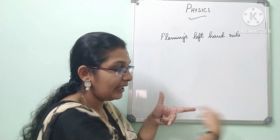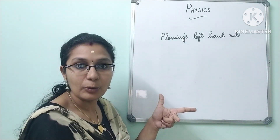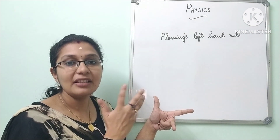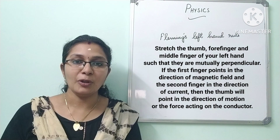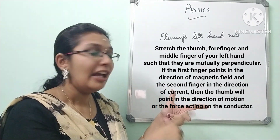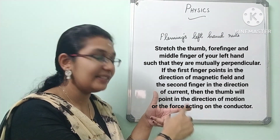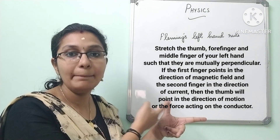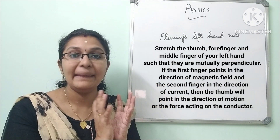If your magnetic field is towards your right and the current direction is coming outwards, then the direction of force is pointing upwards. This is how you use Fleming's left hand rule to determine the direction of force. To summarize: stretch the first three fingers — the thumb, forefinger, and middle finger — mutually perpendicular to each other. If the forefinger represents the direction of magnetic field and the middle finger represents the direction of current, then the thumb represents the direction of force. This is what is explained by Fleming's left hand rule.